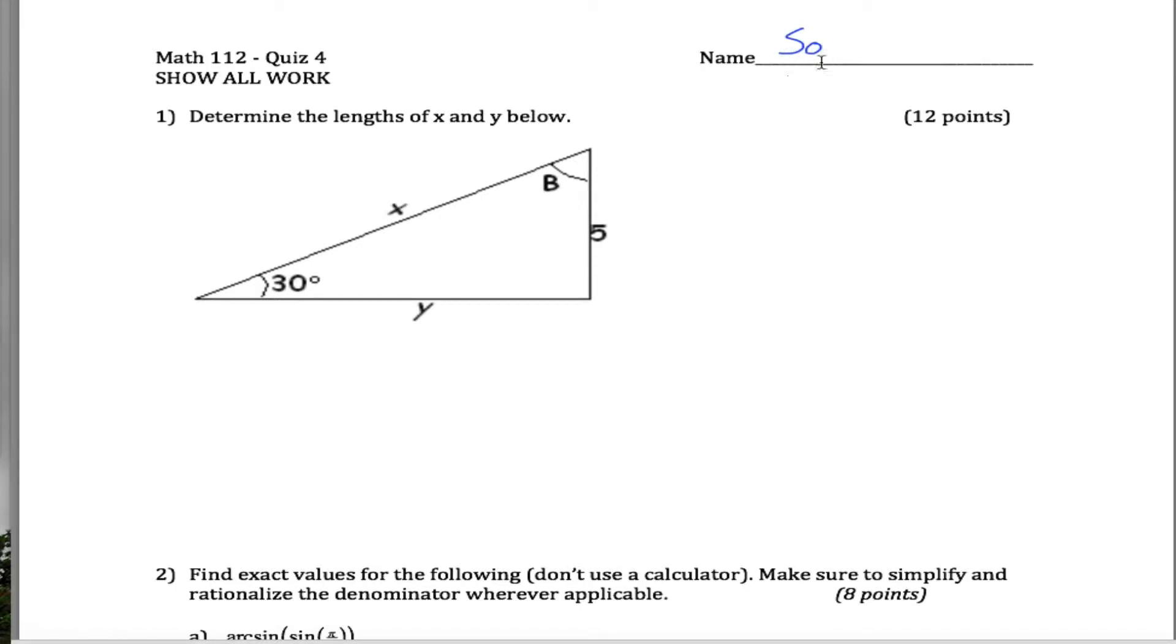Alright, here are quiz four, quiz five solutions for math 112. Given a triangle, we're told that the measure of this angle right here is 30 degrees, and we can assume that this right here is a right triangle, so this measure is 90 degrees, and we're asked to find x and y.